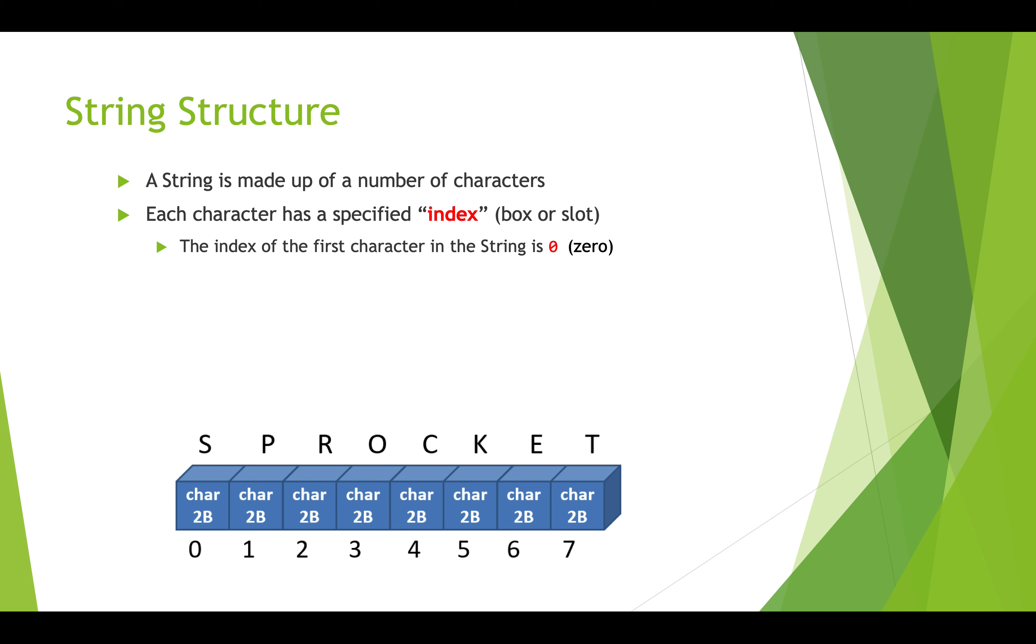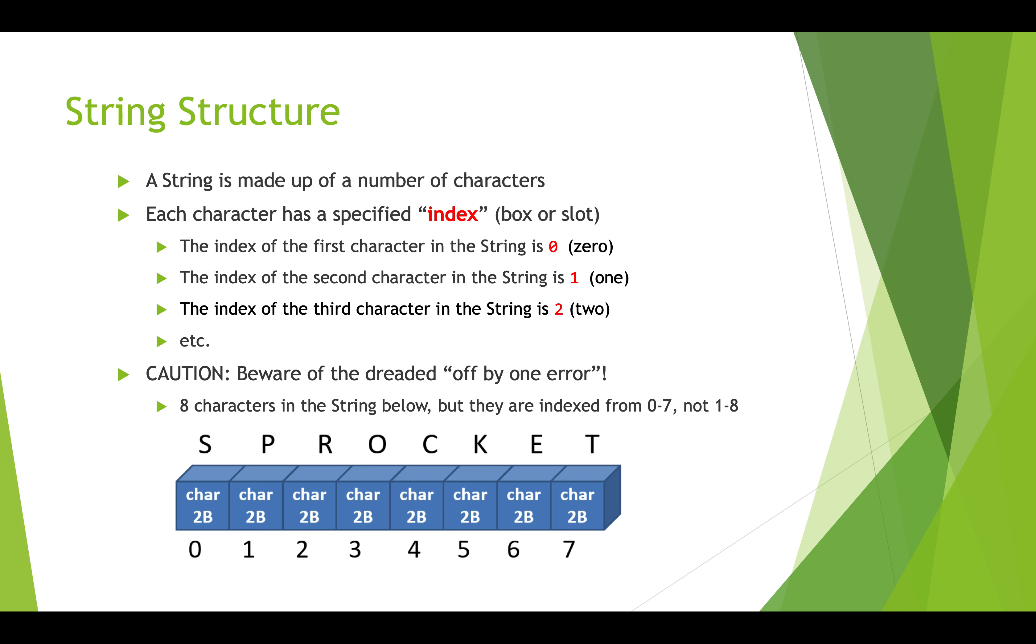This indexing from 0 is really common in computer science and it can take a little bit of getting used to. This can lead to something that we call the off-by-1 error that's really common. We'll talk a little bit more about that at the end of this video. The general idea is that although there's eight characters in the string below, they're indexed not from 1 to 8 but from 0 to 7.